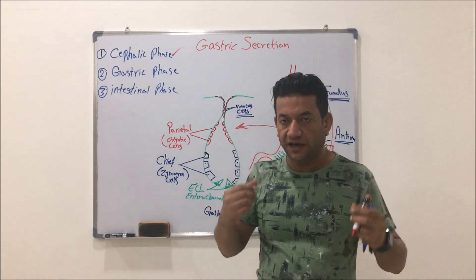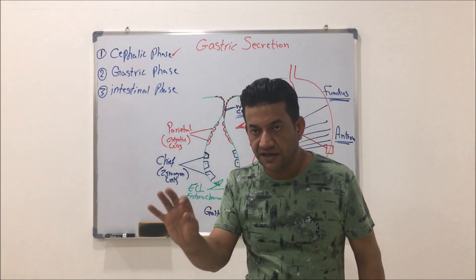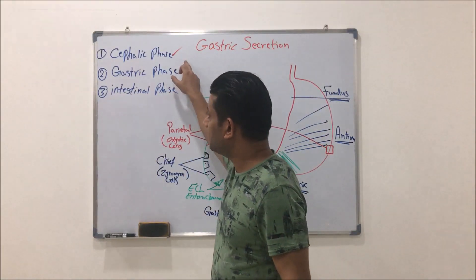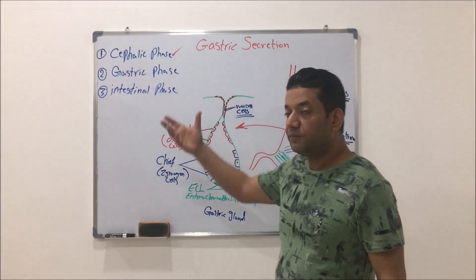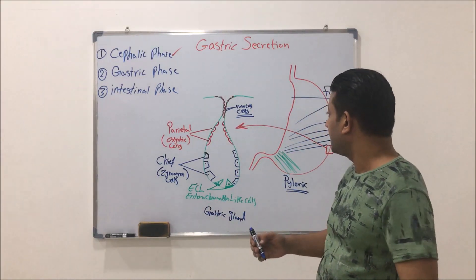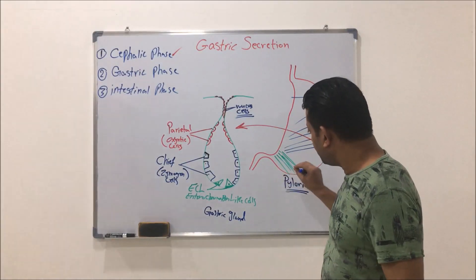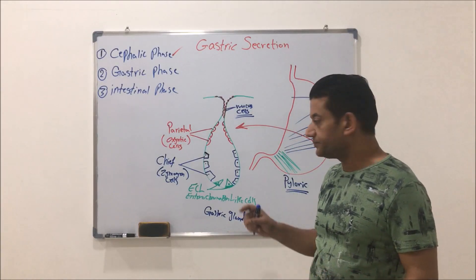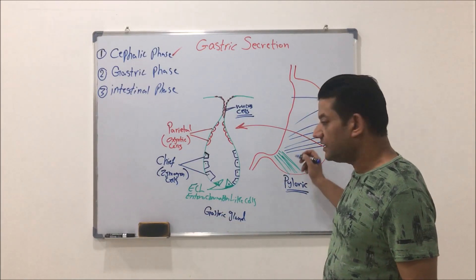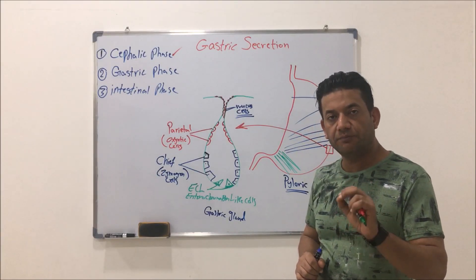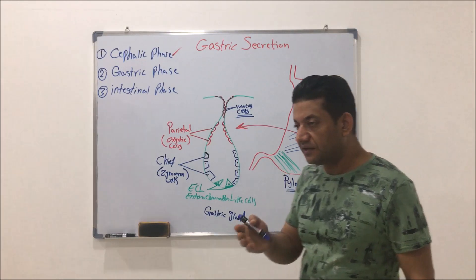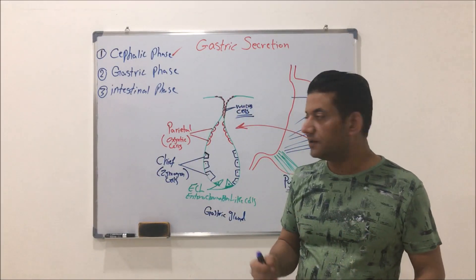During the cephalic phase, signals travel from the brain throughout the vagus nerve to the stomach. The terminals of the vagus nerve stimulate specific nerve endings of the enteric nervous system to secrete what is called gastrin releasing peptide. The nerve endings in the wall of the stomach secrete gastrin releasing peptide during this phase.